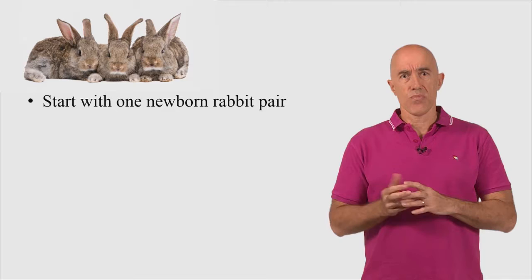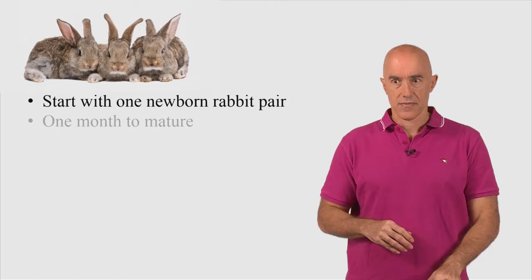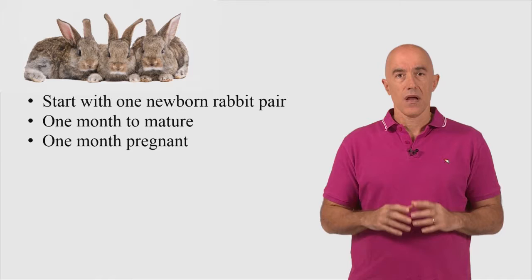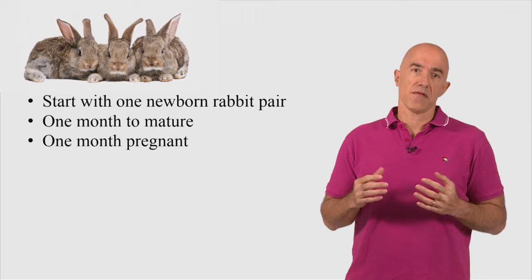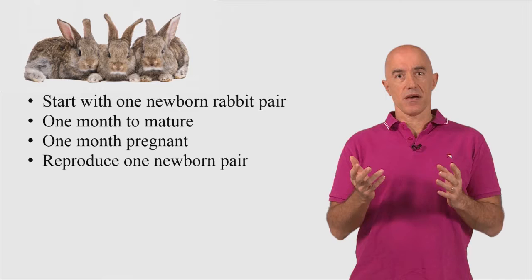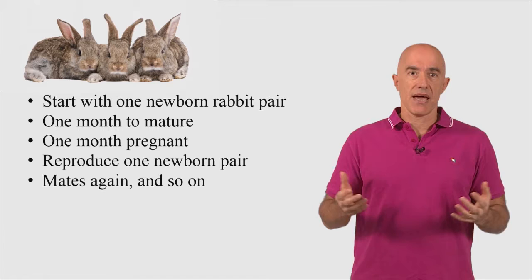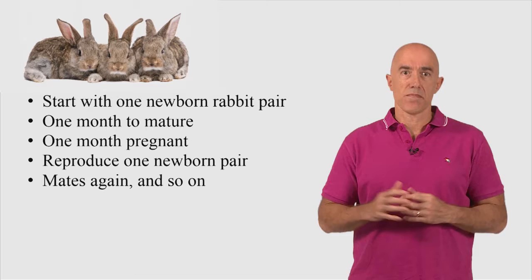So what is the rabbit problem? We start with one newborn rabbit pair, say placed in an enclosed field. These newborn rabbits take one month to mature to adults. The pair is a male and a female. Then they mate and the female becomes pregnant and the female is pregnant for one month. And then gives birth to a newborn rabbit pair. And then the rabbit pair mates again and so on, continuing to give birth every month.